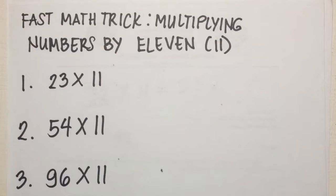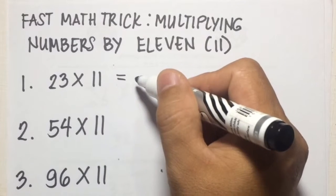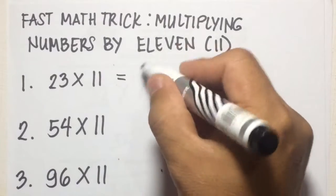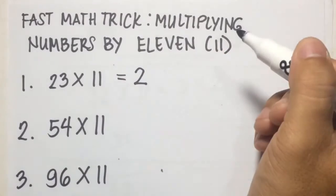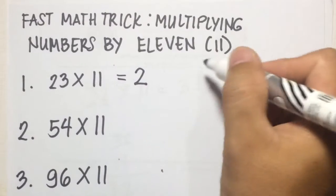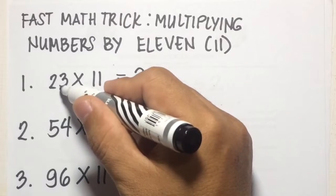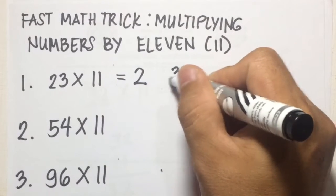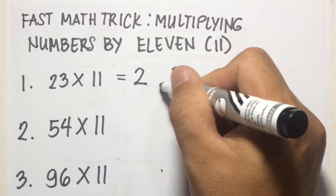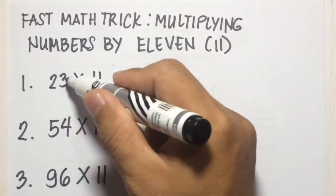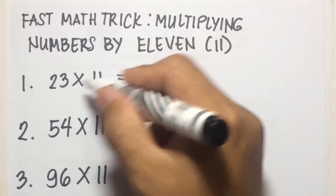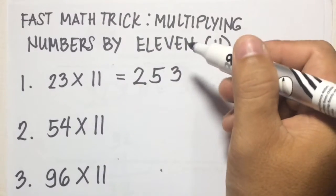Let's have examples. Number 1: 23 times 11. The first digit of our answer is the first digit of the given number, so we have 2. The last digit is the second digit of the number, so we have 3. And the middle digit is the sum of the two — so 2 plus 3 is 5. So 23 times 11 is 253.